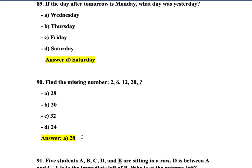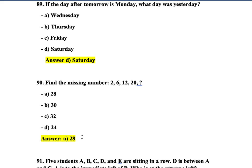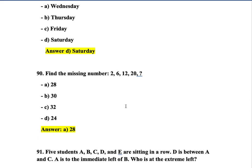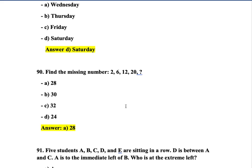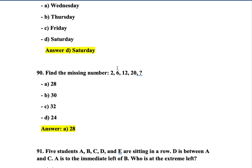Question 90: Find the missing number in the series: 2, 6, 12, 20, __ . The correct answer is option B — 30. The pattern: 2+4=6, 6+6=12, 12+8=20, 20+10=30.